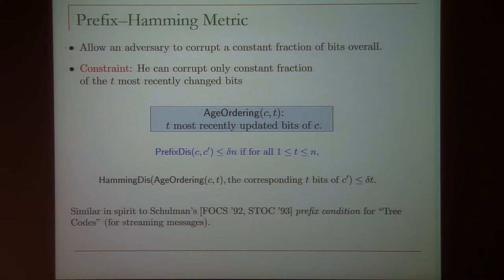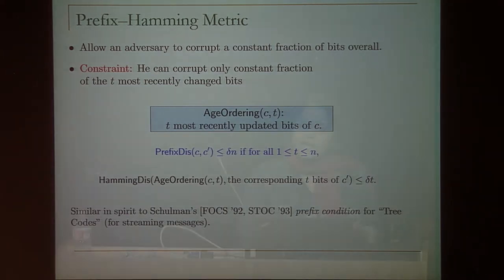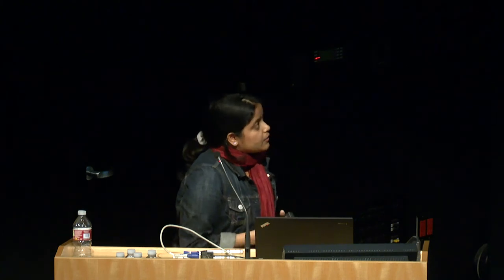For those familiar with Shulman's work on tree codes, this is very similar in spirit to Shulman's prefix condition. One motivation for considering a metric like this is that when you talk about physical bits, they degrade with time. The longer a bit resides in memory, the more likely it has faded away and the more likely there are errors. If a bit was written recently, it will have fewer errors because it was written and accessed just recently.